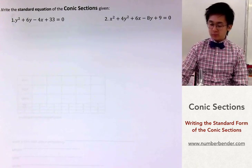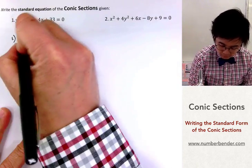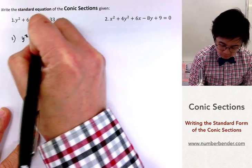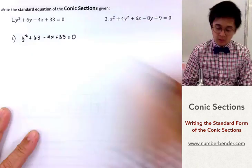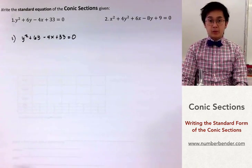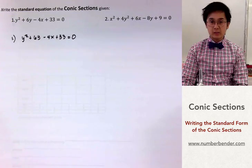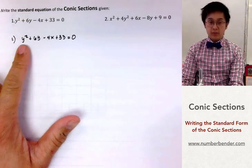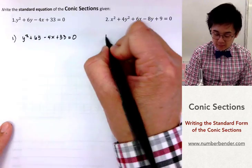Now for the first problem. The first step is to identify the conic section, and this one is easy because we only have one variable with an exponent of two, so we already know that this is a parabola.